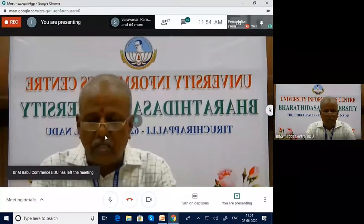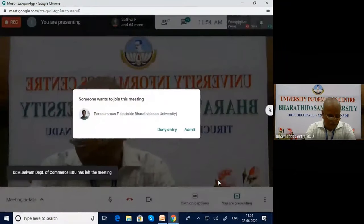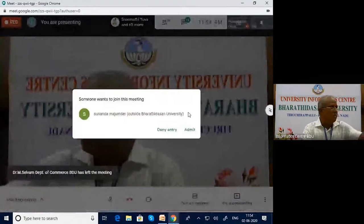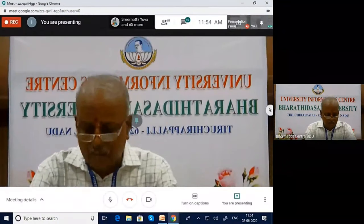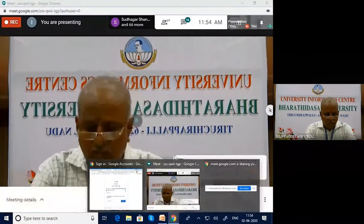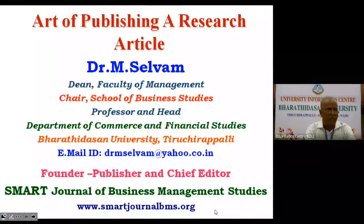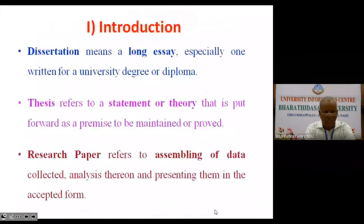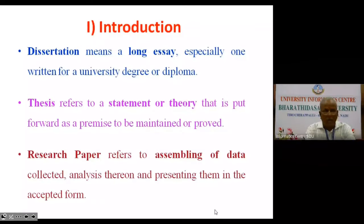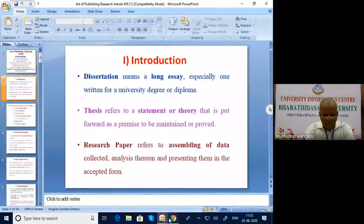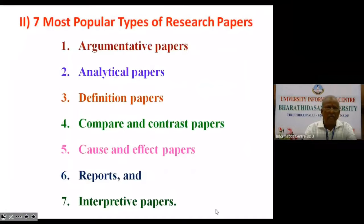Dear friends, the outcome of research comes in three forms. There is a dissertation, thesis, and research papers. You are all aware that a dissertation means a long essay, especially one written for a university degree and diploma. The third form is a research paper, which refers to assembling collected data, analyzing it, and presenting it in the accepted form.